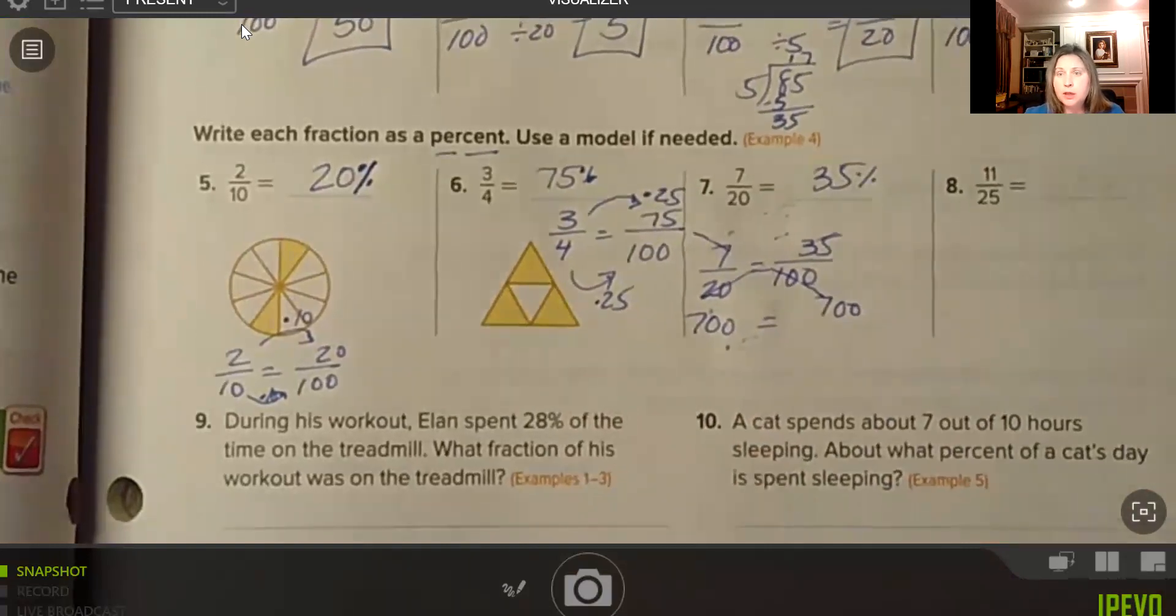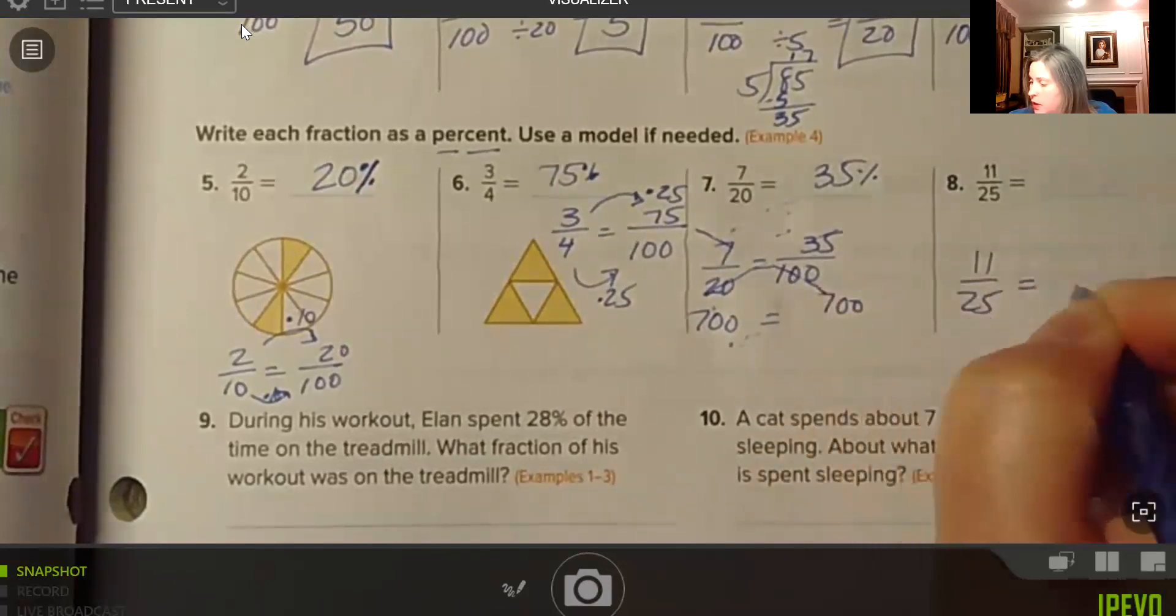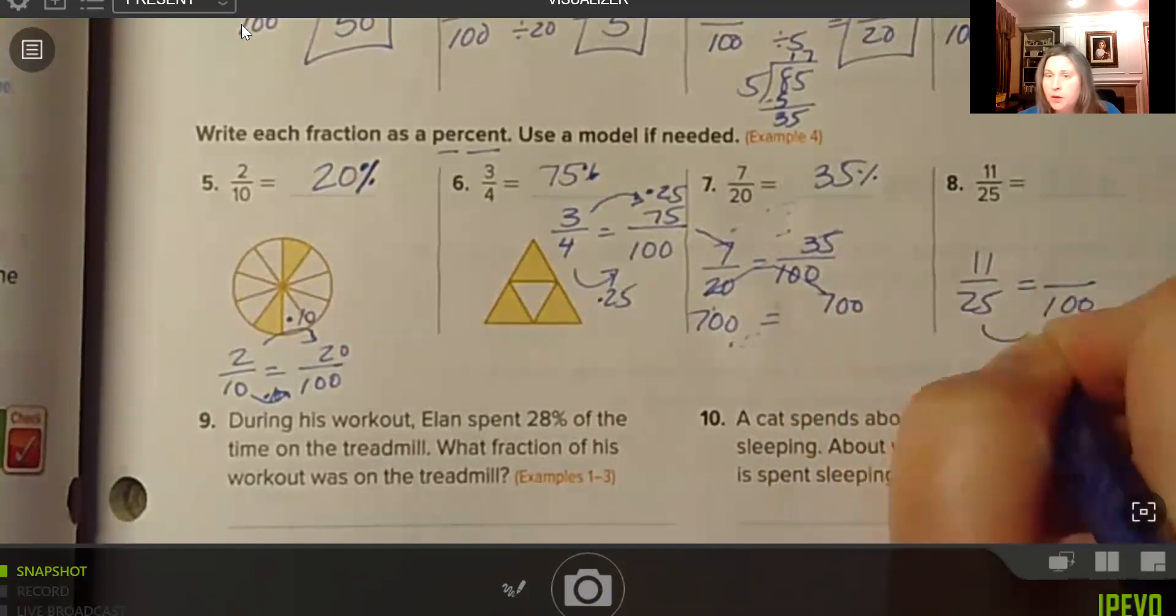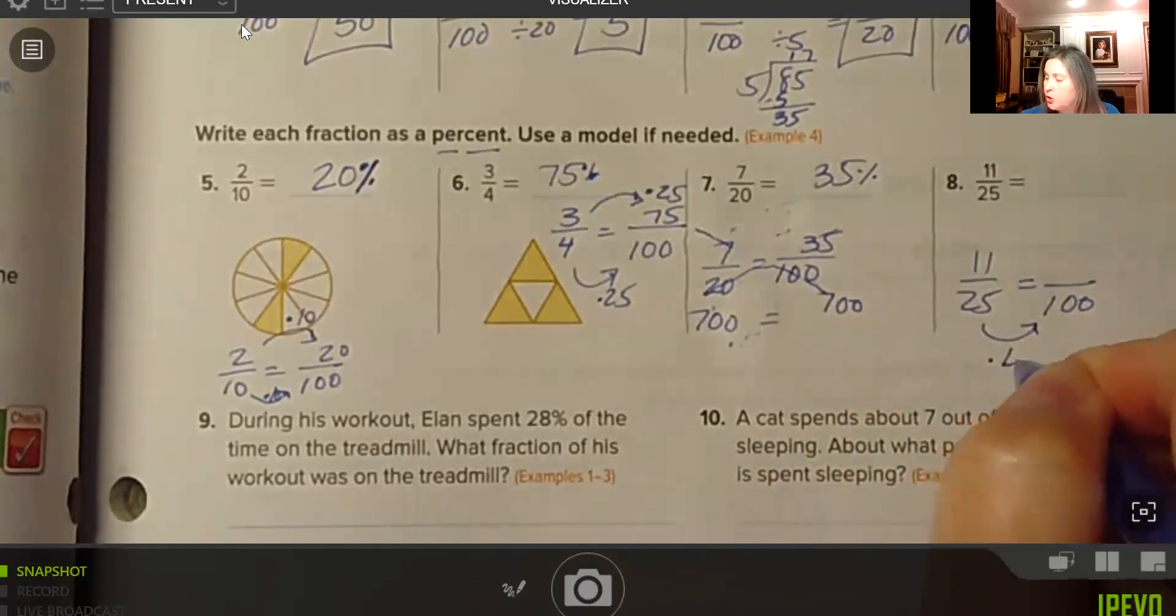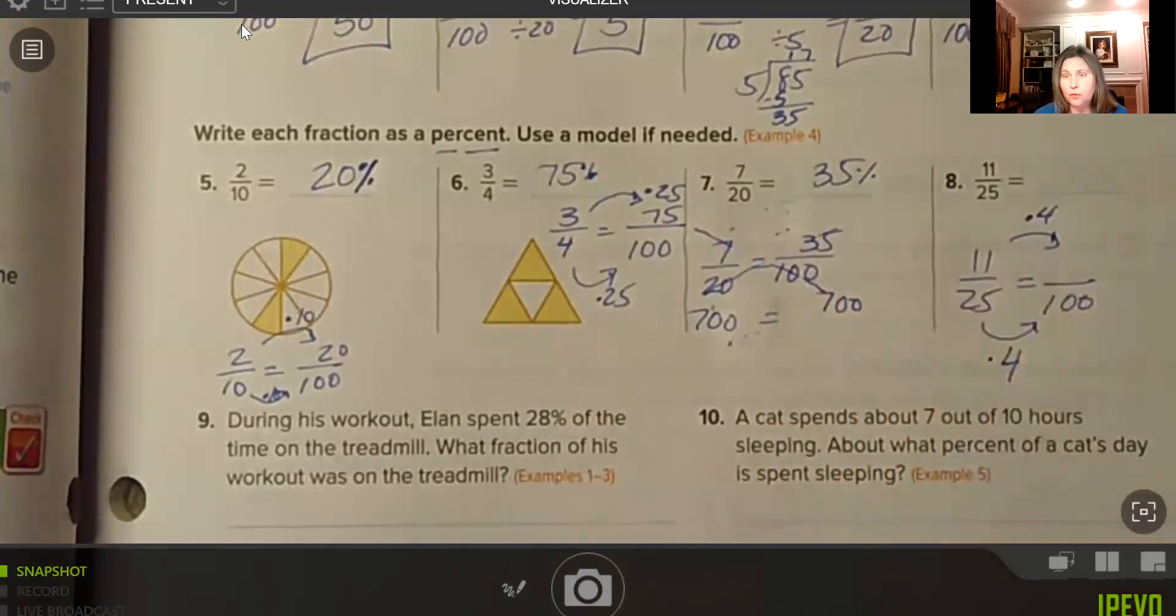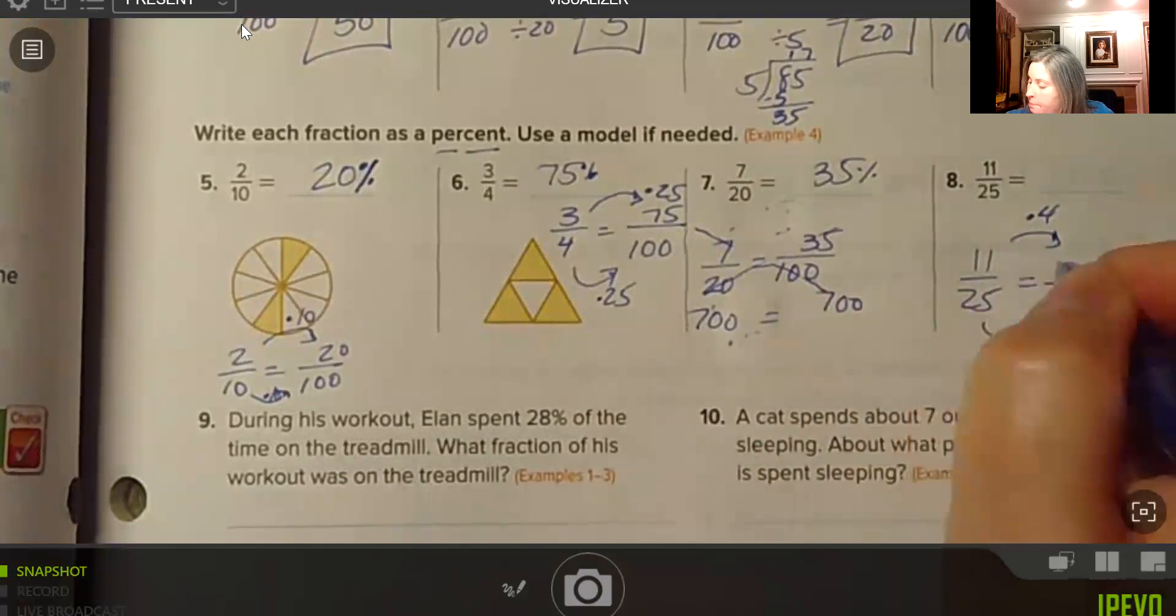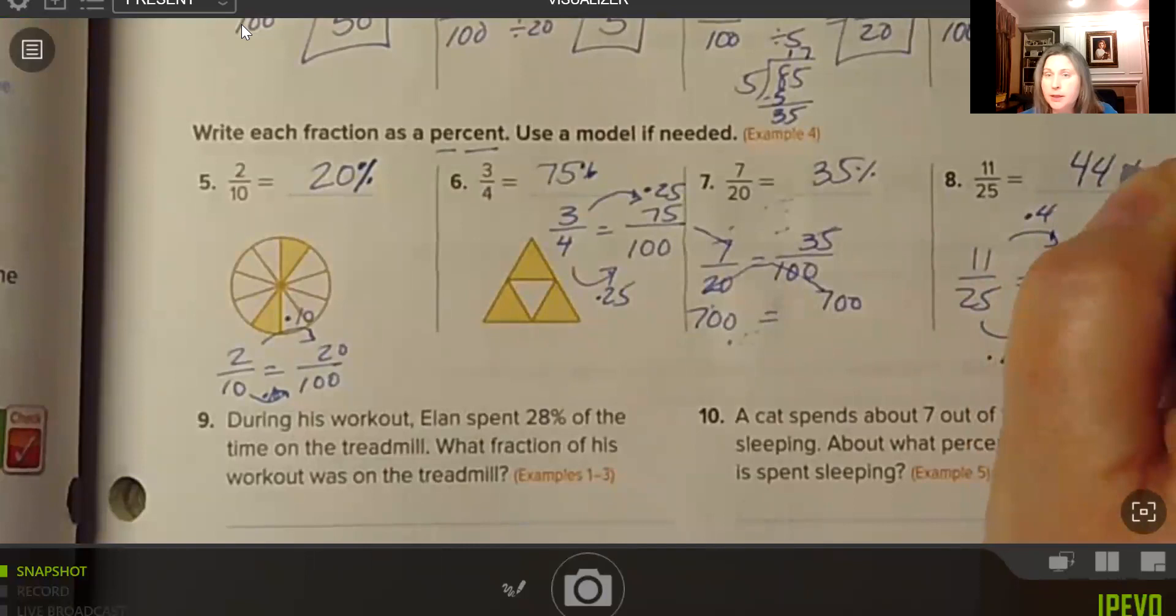Moving on to number 8, we have 11/25. And we want to change that to a percent. So we want a denominator of 100. So 25 times 4 would give us 100. So I need to do that same thing to my numerator times 4. 11 times 4 is 44. So 44 per 100 is 44 percent.